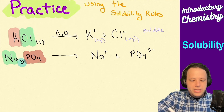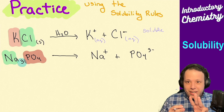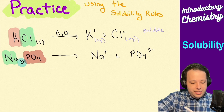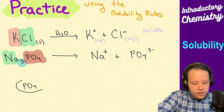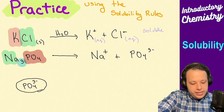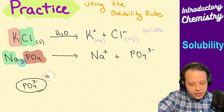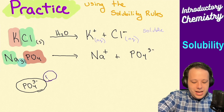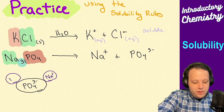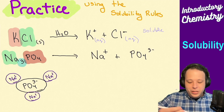The subscript tells you there are three sodiums bound around one phosphate — it's like having three sodiums completely surrounding that phosphate on all sides. Being that there are three individual sodium ions and one phosphate ion, they all fully dissociate.